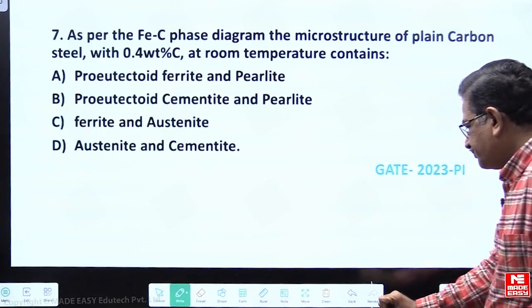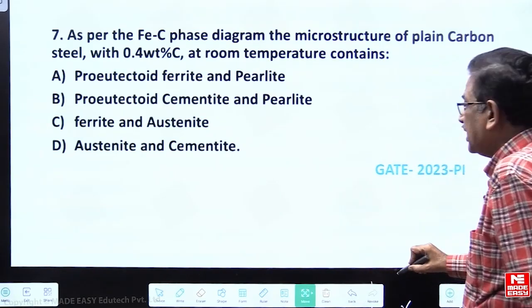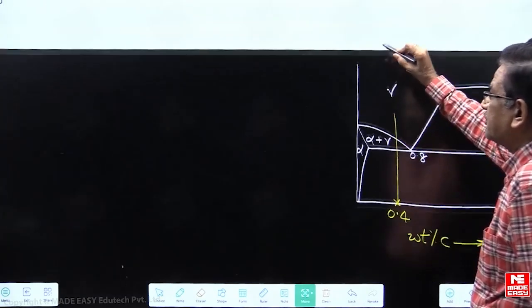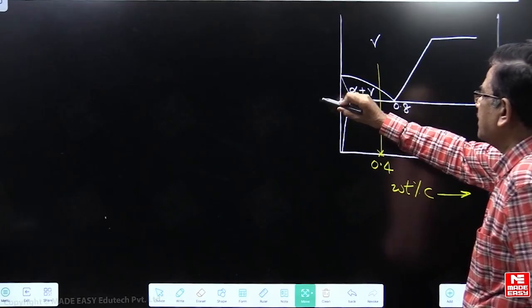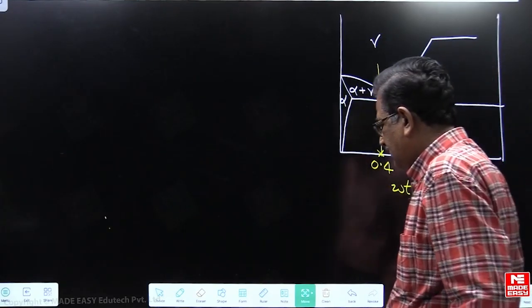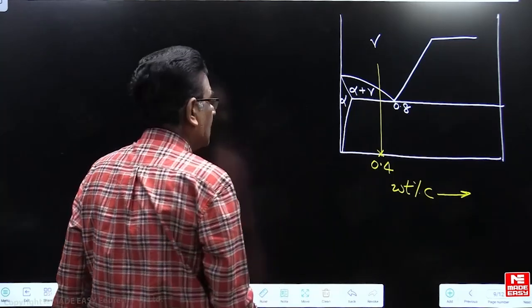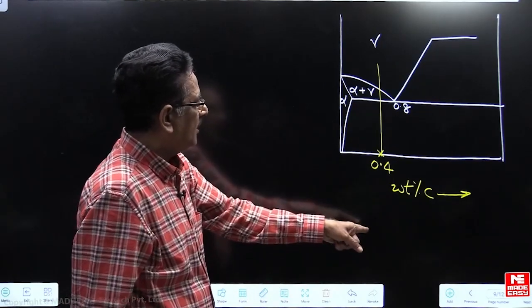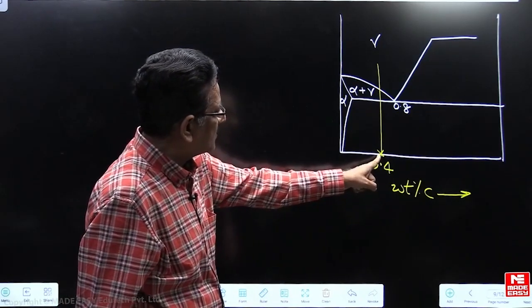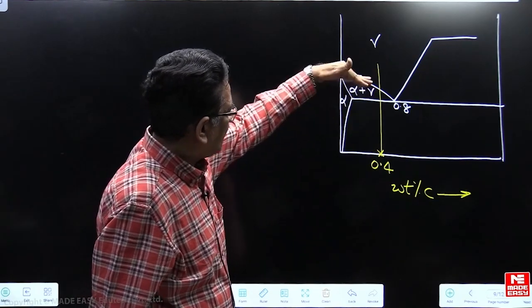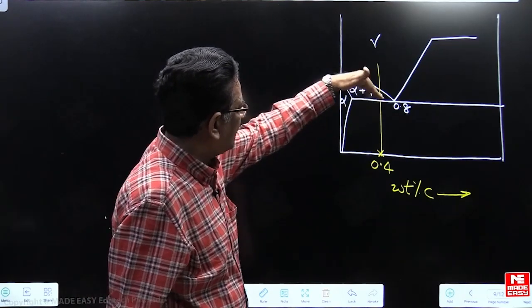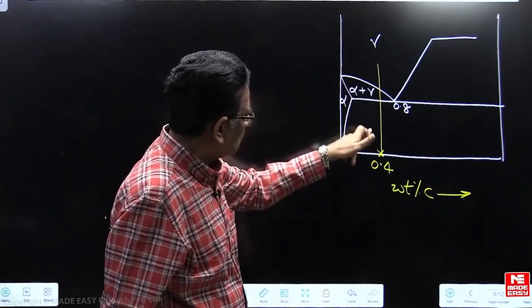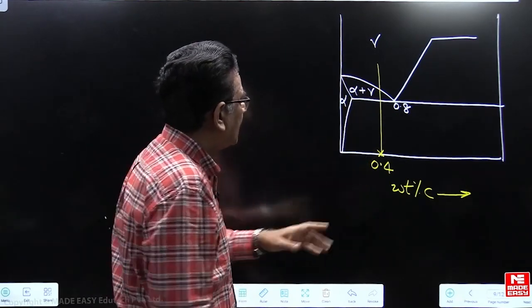Now let us try to understand this. Let us take 0.4% carbon steel here and try to see the iron-carbon diagram. When you look at the iron-carbon diagram, you are able to understand when 0.4% carbon steel is cooled from above this SA3 line down to room temperature, what is going to happen?